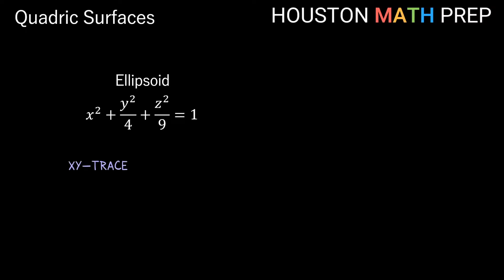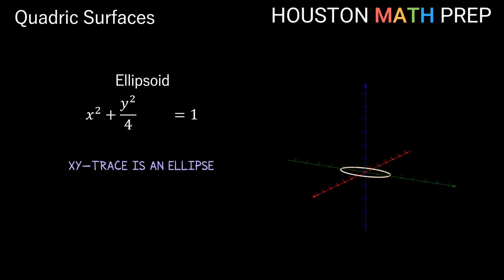A coordinate plane trace is found by setting the other variable equal to 0. For the xy trace, we set z = 0, which zeros out the z term and leaves an equation only involving x and y. If we know our 2D conics well, this is an ellipse in the xy plane. With a = 1 and b = 2 (since 4 = b²), we get an ellipse centered at the origin going out one unit in x and two units in y.